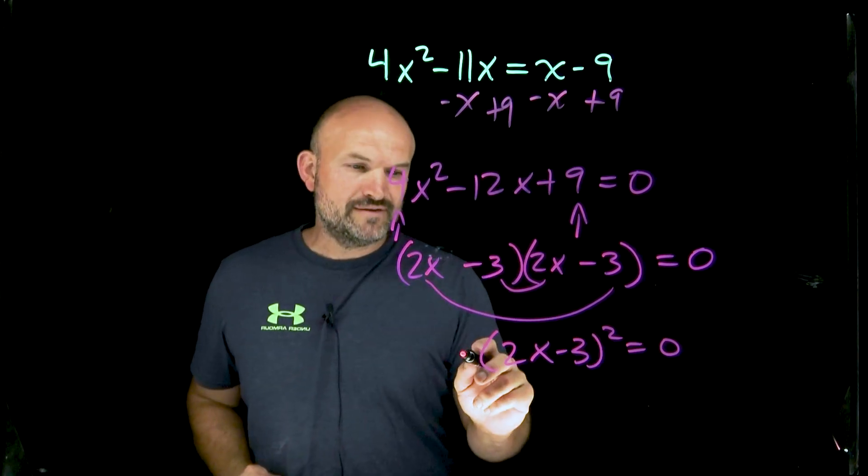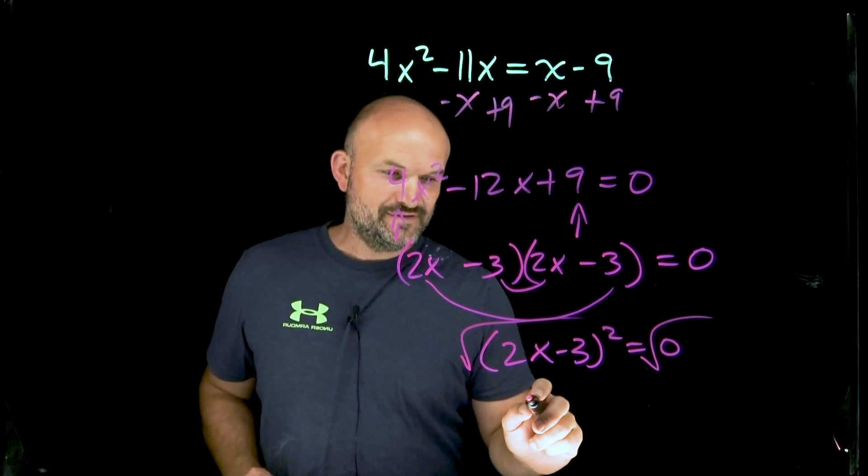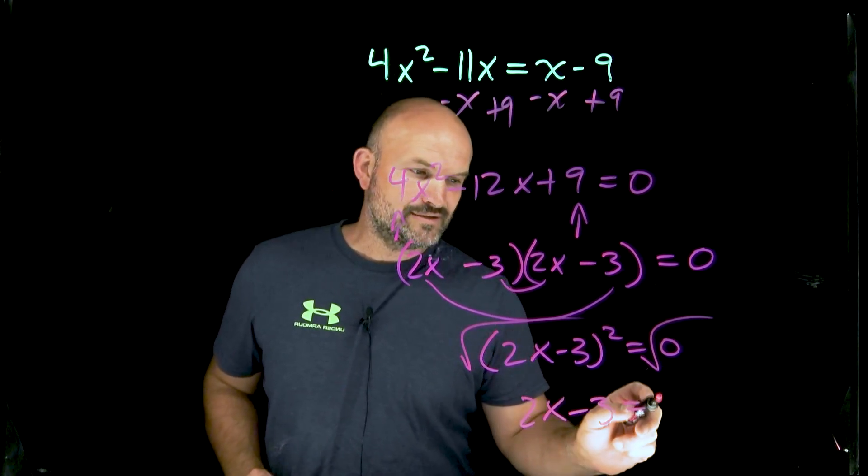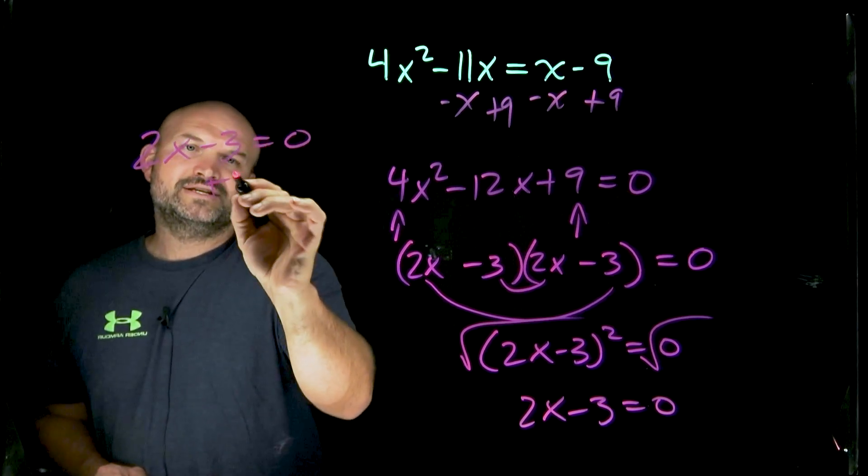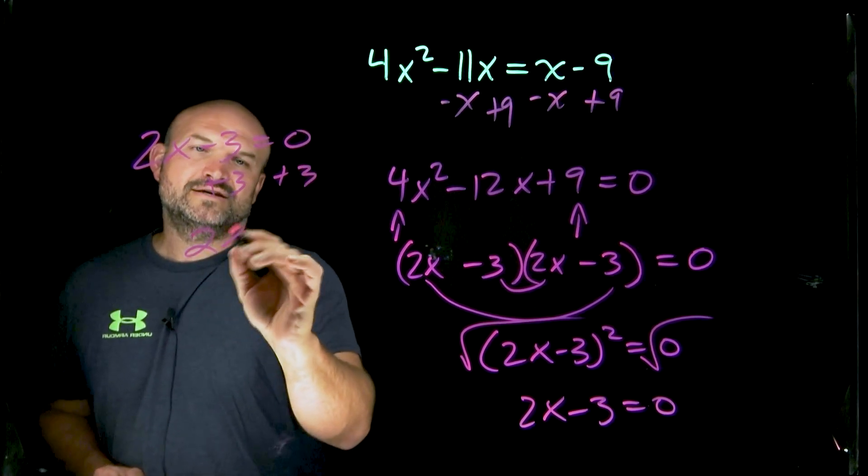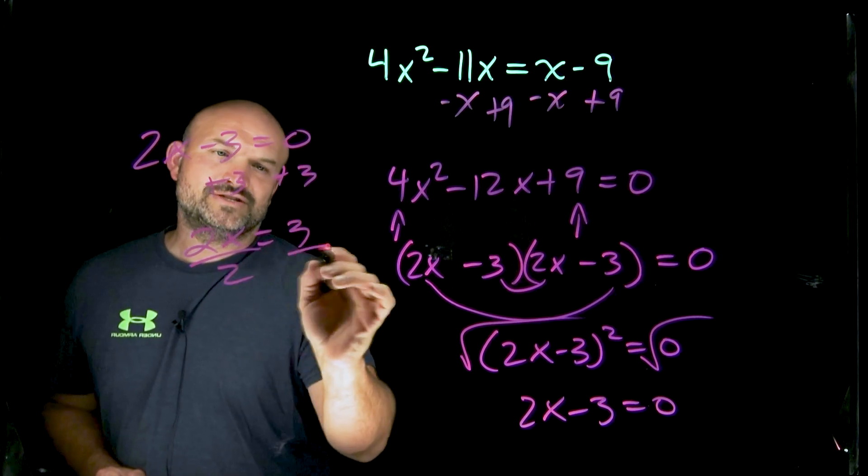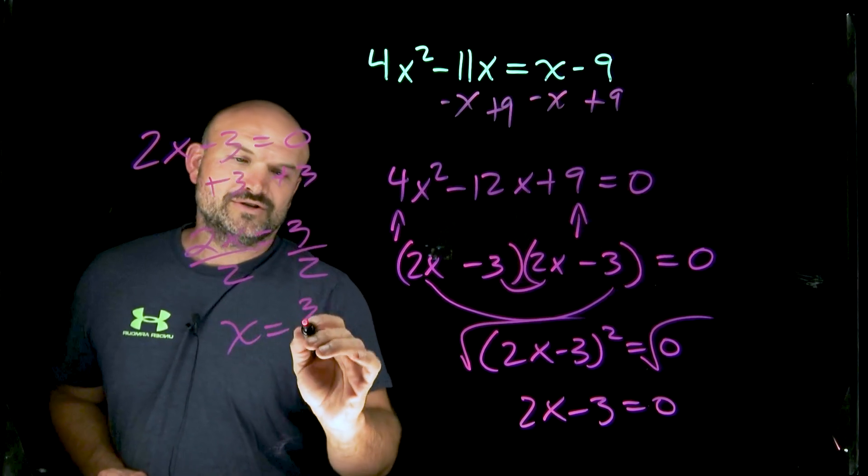Take the square root of both sides. That's just going to leave you now with two X minus three is equal to zero. Let's go ahead and write it over here. And then you can just add the three to both sides. Two X equals three, divide by two, divide by two, X is equal to three halves.